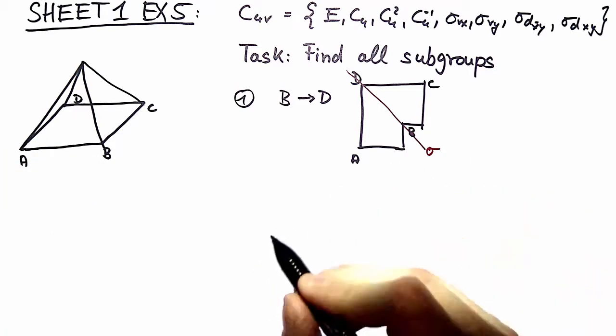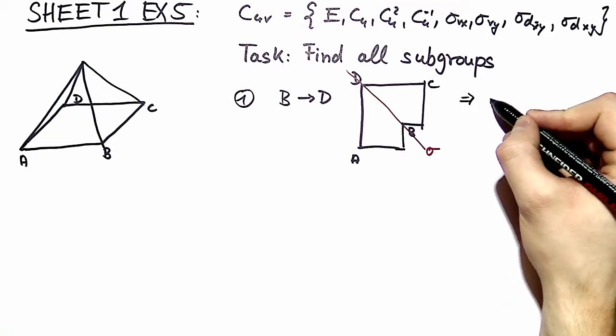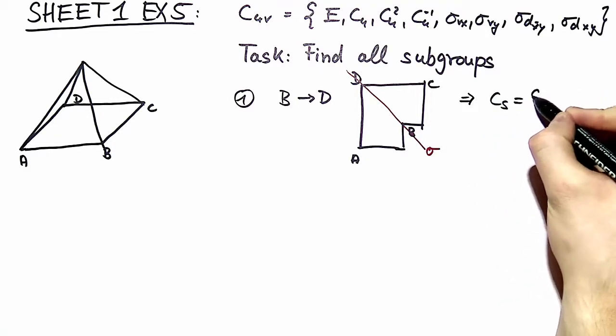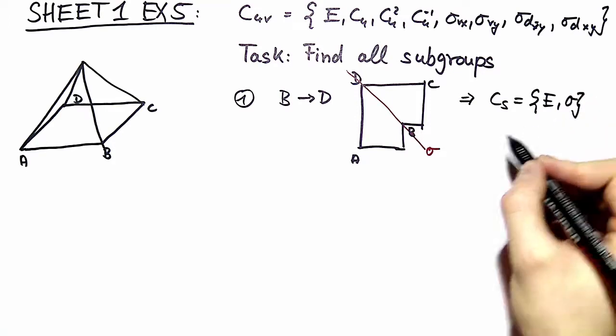This is now a subgroup of C4V. It is called CS and it consists only of the identity and a reflection plane.